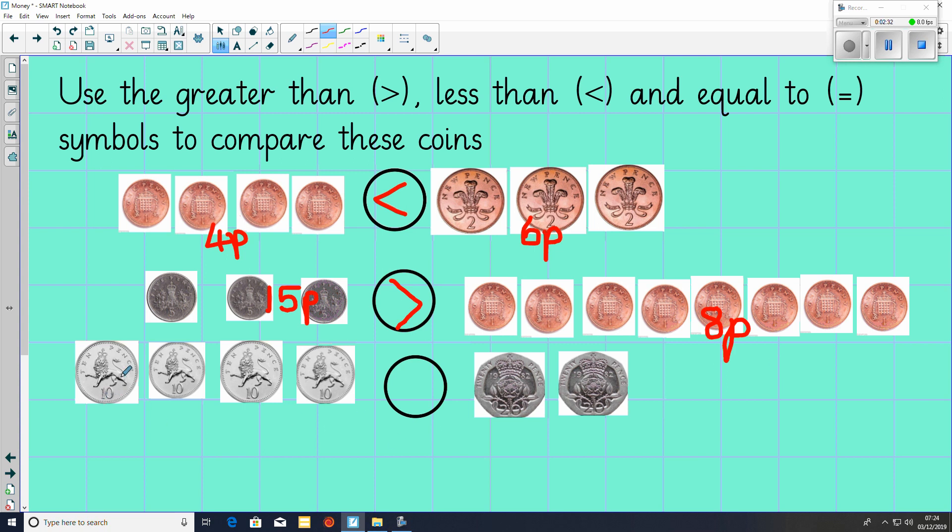And for the bottom question, we've got 10, 20, 30, 40. 4 10p's is 40p. And 20, 40. 2 20p's is 40p. Because these amounts are the same, the missing symbol will be equals.